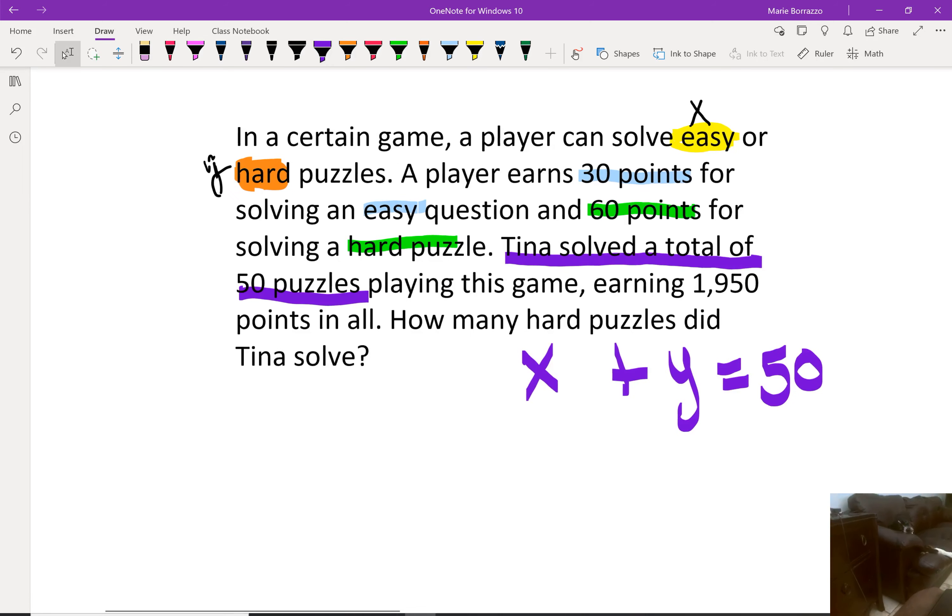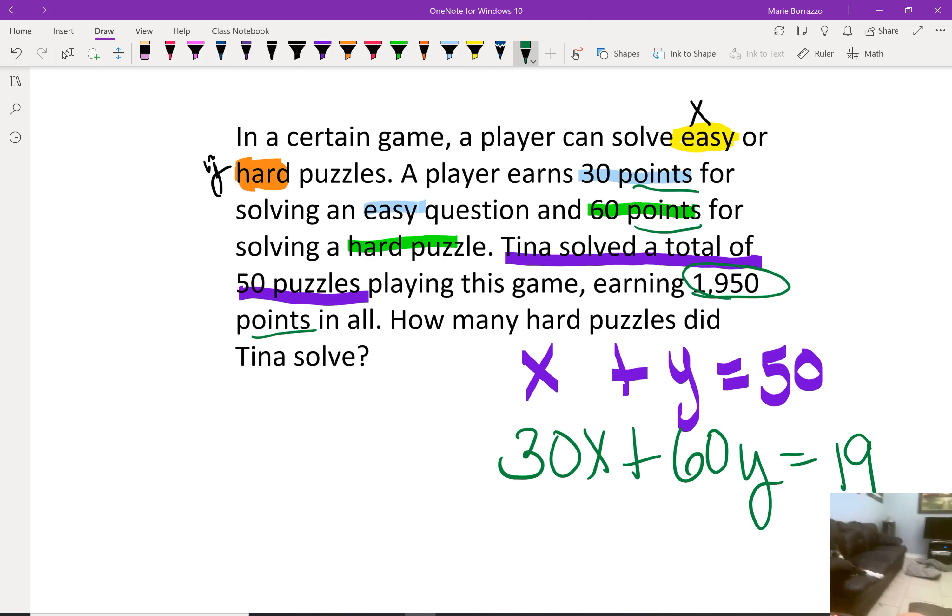Now comes the 30x and the 60y, because that's the points. Notice that this is the points in all, 1,950. So I know that they earned 30x, so 30 points for every easy they solved, plus 60y for every difficult puzzle they solved, to get a total of 1,950 as the total number of points.